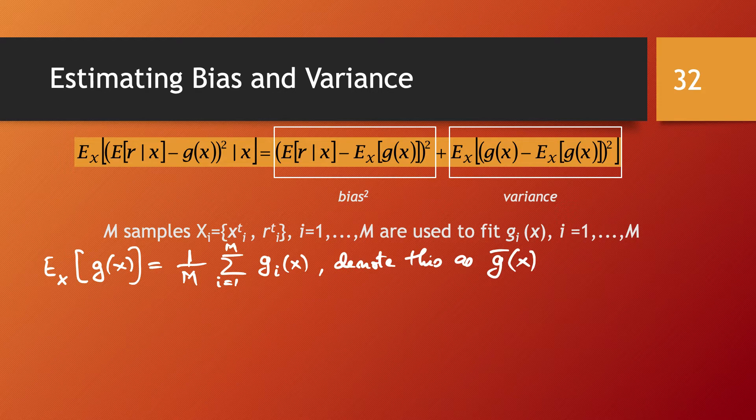So g̅(x) — the average of g(x) over all estimators g_i — takes care of that term.